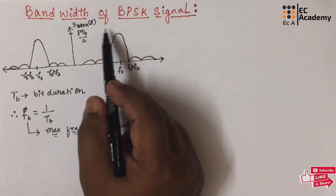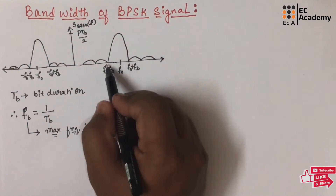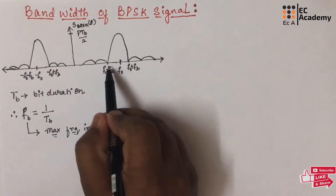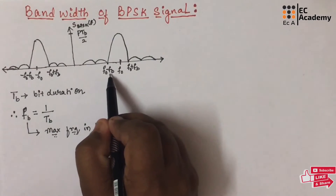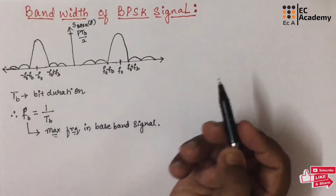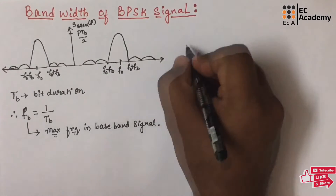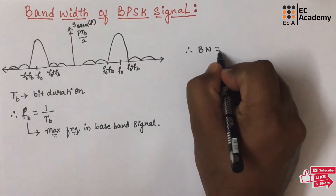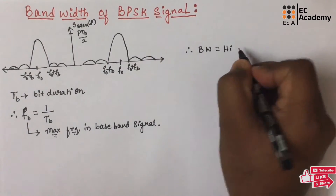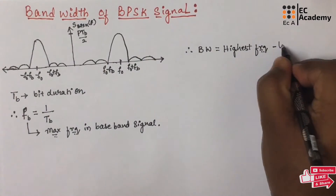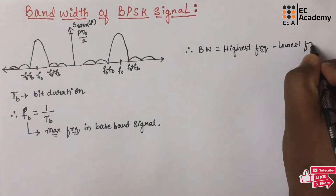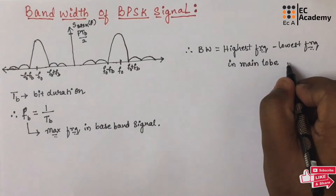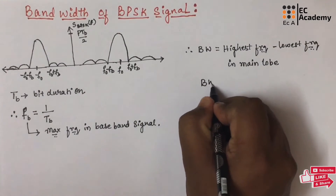If we consider the spectrum of BPSK signal and consider this main lobe, it is centered across the carrier frequency F0 and it will extend from F0 minus FB up to F0 plus FB. Therefore, the bandwidth of BPSK signal can be given as highest frequency minus lowest frequency in the main lobe of the spectrum. So, we can write bandwidth is equal to,